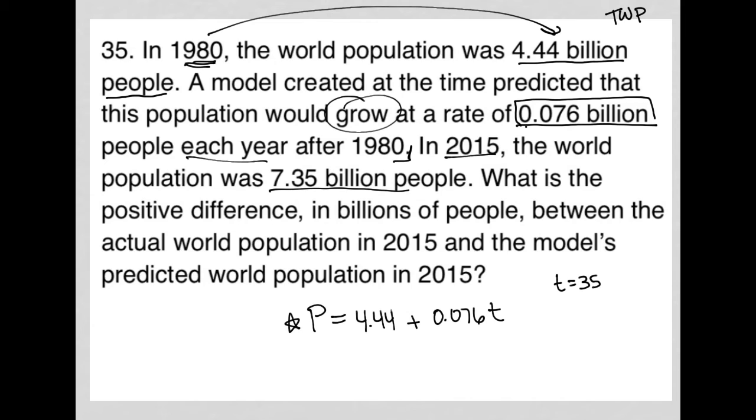By replacing T with 35, I should be able to figure out what this model predicted the population to be. So that would be P equals 4.44 plus 0.076 times 35. I go to my calculator, 0.076 times 35, and I'm adding that to 4.44.